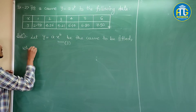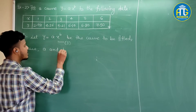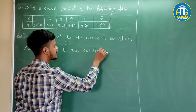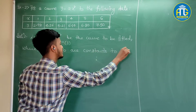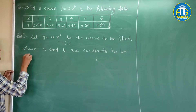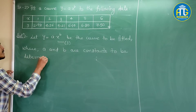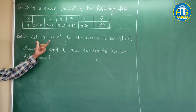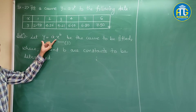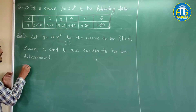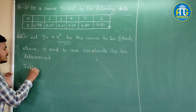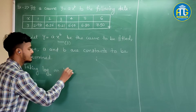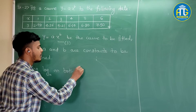Where a and b are constants to be determined. Now, what we are going to do is take log on both sides of equation 1. Taking log on both sides, we get: